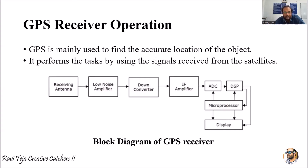The block diagram of a GPS receiver consists of: a receiving antenna, low noise amplifier, down converter, intermediate frequency amplifier, ADC (analog to digital converter), digital signal processing unit connected to a microprocessor, and the whole unit is connected to a display. On that display we can find the exact details of the map.